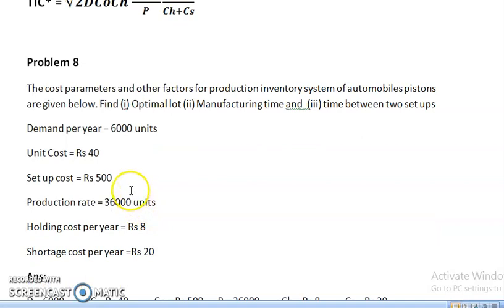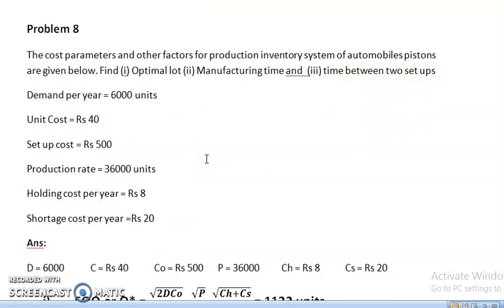The cost parameters and other factors for production inventory system of automobile pistons are given below. Find optimal load, manufacturing time, and time between two setups.